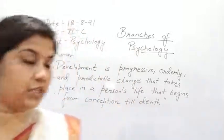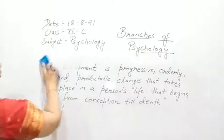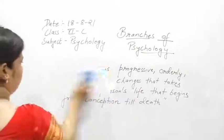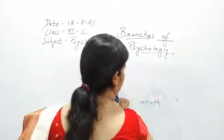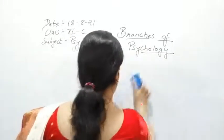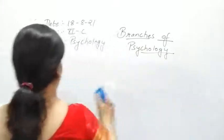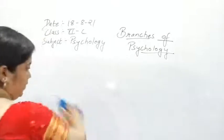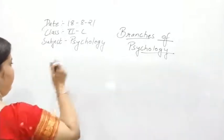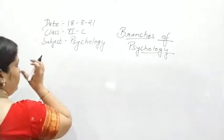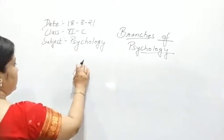Moving to the next branch of psychology. The next branch to note down is cultural psychology, after the four branches already discussed — cognitive, biological, neuro, and developmental.